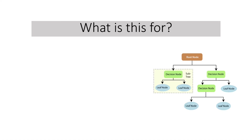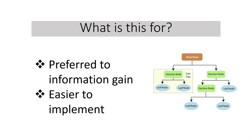Why do we study this? Gini impurity is preferred over information gain because it is simpler to compute — unlike information gain, which contains many logarithms that are computationally intensive. It is also easier to implement.